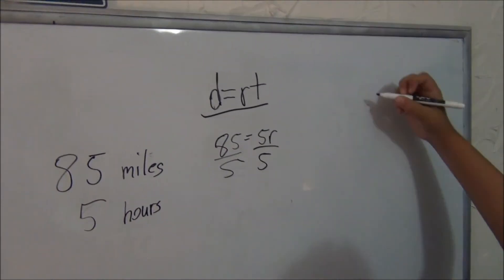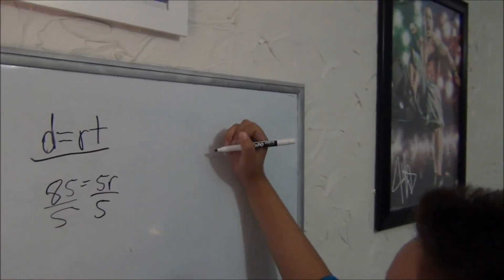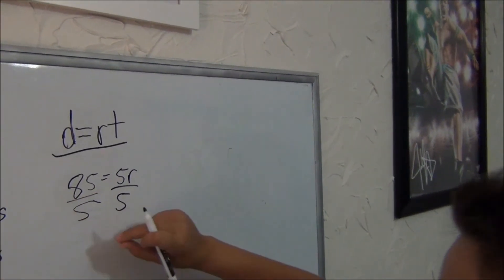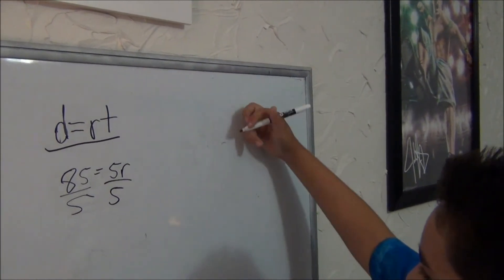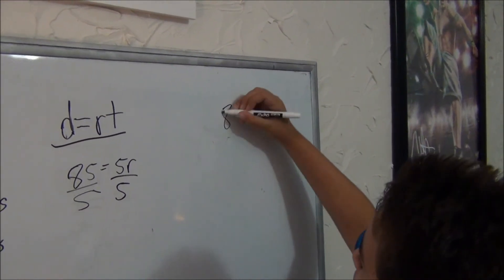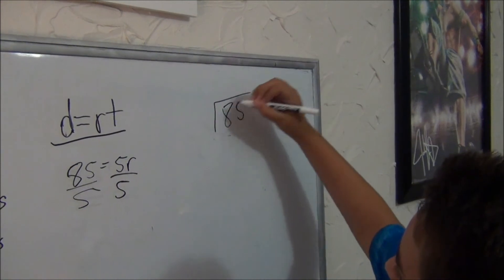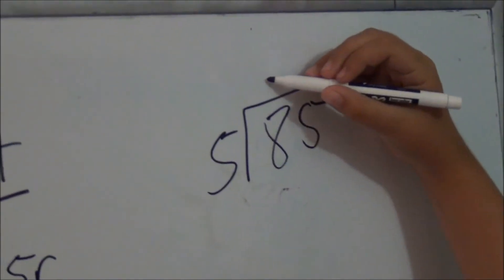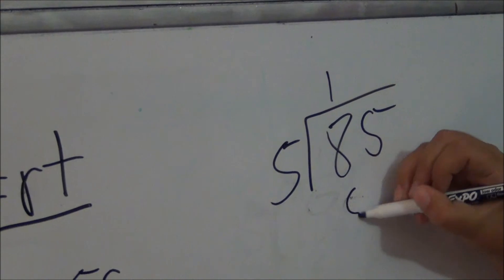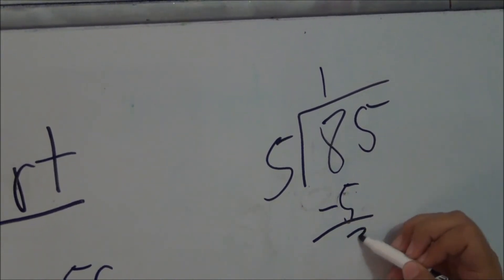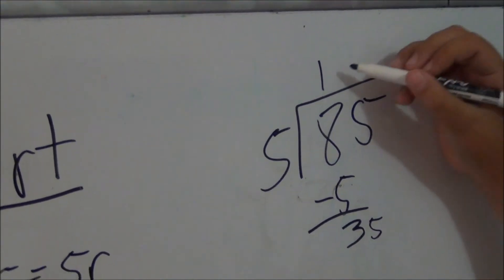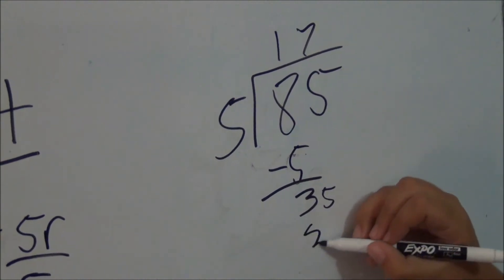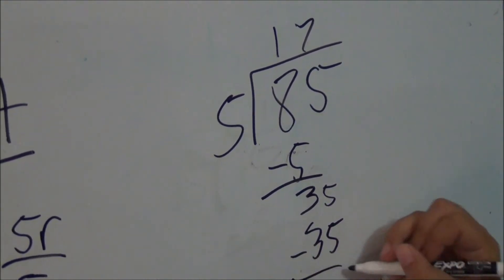Alright, so you can show your work on the side. Normally, you don't want to put your work behind the problem. So, let's see. 85 divided by 5. 5 goes into 8 once, carry down. 5 minus 3. 35 goes in 7 times, and it breaks even.